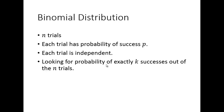Think of it like a coin that you flip n times. The probability of getting a head on each flip is p, making the probability of a tail 1 minus p. This doesn't have to be 50% — maybe the coin is weighted so 30% of the time it comes up tails and 70% heads.